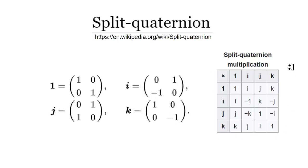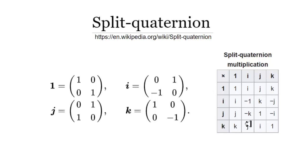The rules of the split quaternions are not the same as the rules for the quaternions. In the split quaternions: 1 squared equals 1, I squared equals minus 1, J squared equals 1, and K squared equals 1. In the quaternions, J squared and K squared also equal negative 1 — so these are different rules.